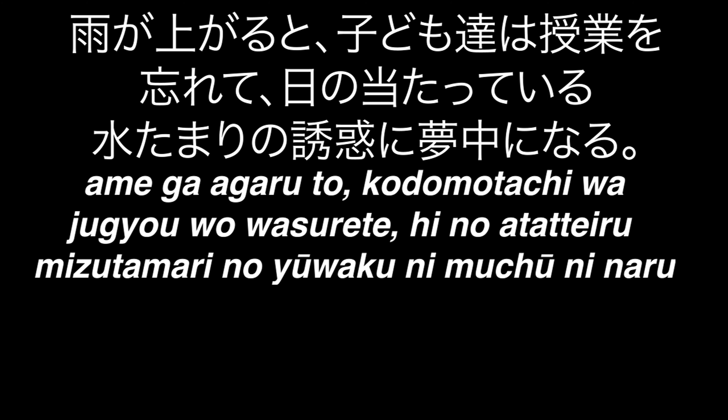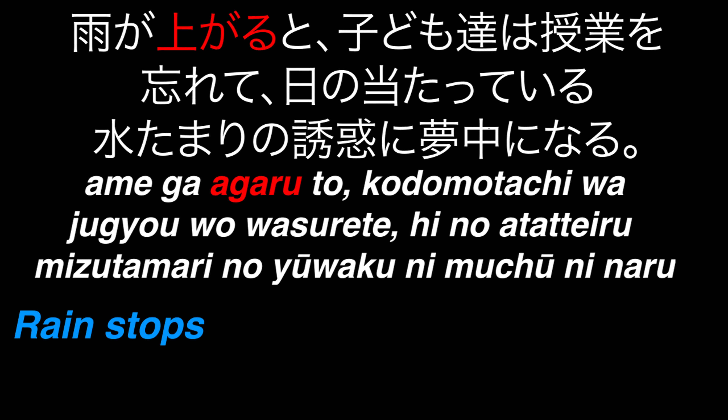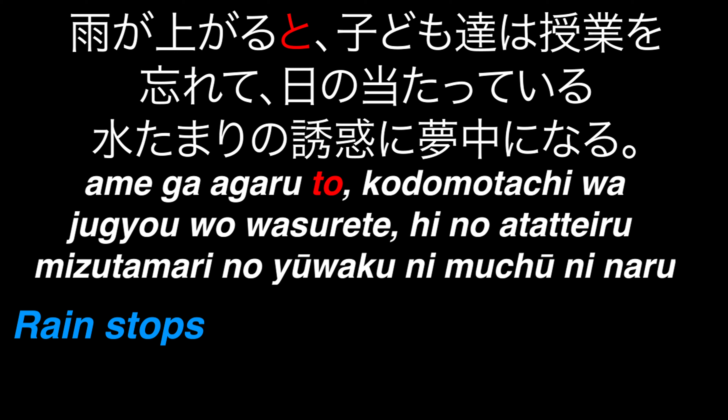Finally, let's dissect one massive sentence. Ame means rain, and we have the verb agaru, which usually means to rise or to enter, but as we're talking about rain, it actually means to stop. Ame is given the subject particle as it's the one doing the action. This particle, to, has a lot of uses, but in this case it means and, or and then. So far we have: rain stops, and then.